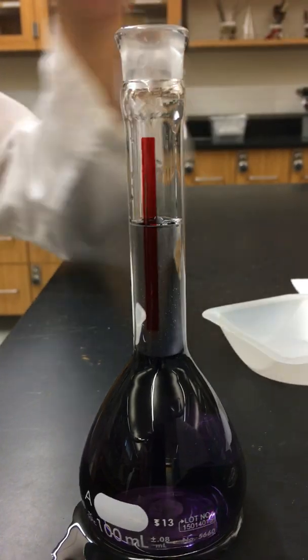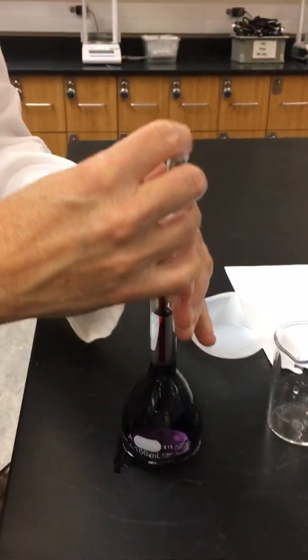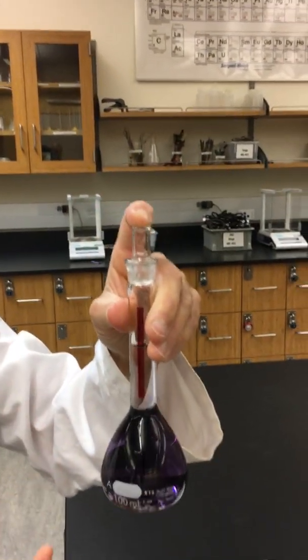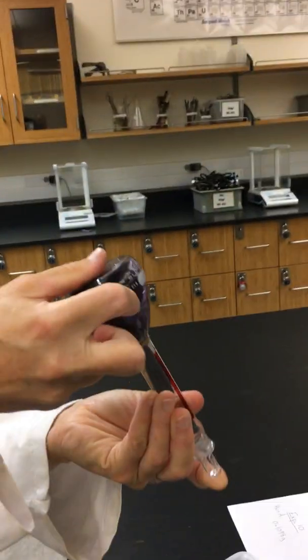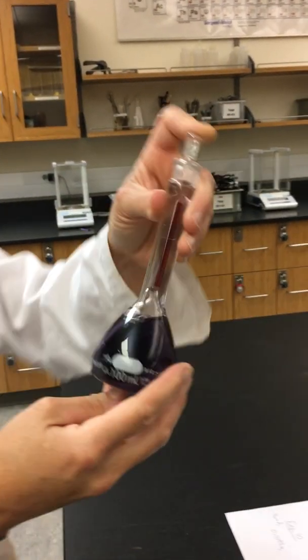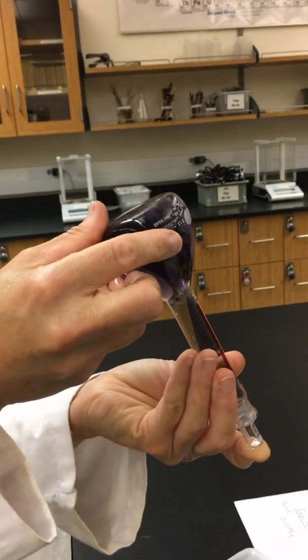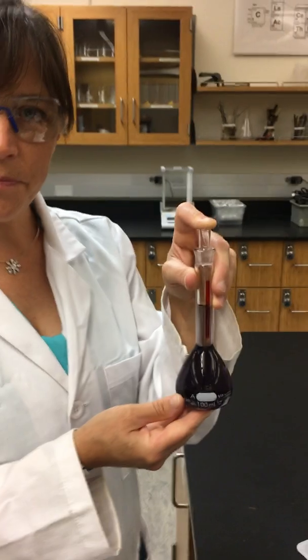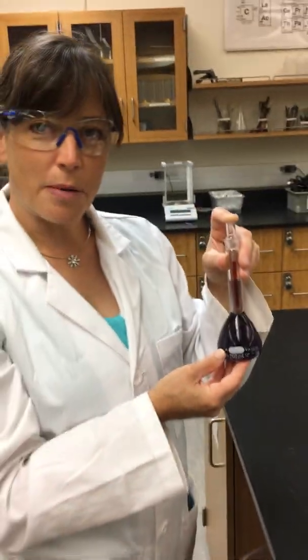So now we have 100.00 milliliters of our solution. But to make this a true solution, we always want to make sure that it's nice and homogeneous. So we'll mix it. Okay, so now we have our Kool-Aid solution. So now we're ready to do part B.